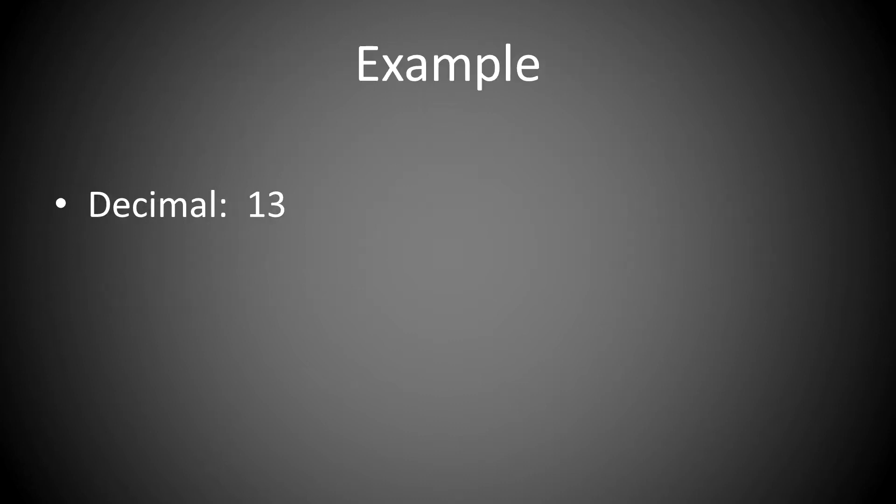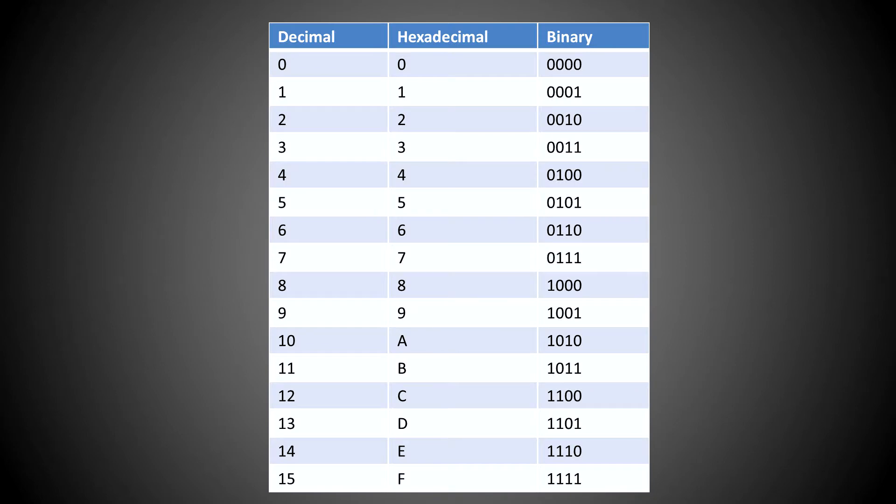For example, if we have the decimal number of 13, that's the hexadecimal number of D, and the binary number of 1101. This handy conversion chart is used for converting between decimal, hexadecimal, and binary representations of numbers from 0 to 15.